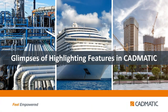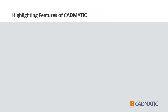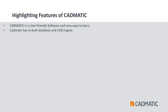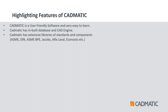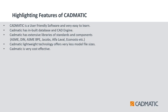Now we will highlight some key features in Cadmetic software. Cadmetic is user-friendly and easy to learn. It has inbuilt database and CAD engines, so it is not dependent on any other software. Cadmetic has extensive libraries of standards and components such as ASME, DIN, BP, Jacobs, Alfa Laval, Econosto, etc., and special components can also be created in the library. The lightweight technology offers very small model file sizes for easy file transfer, and Cadmetic is very cost effective.